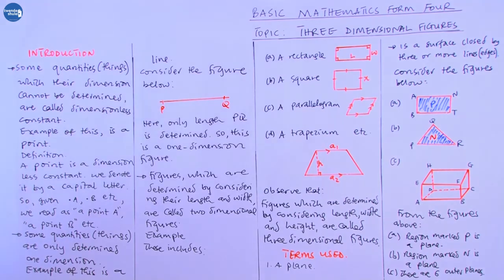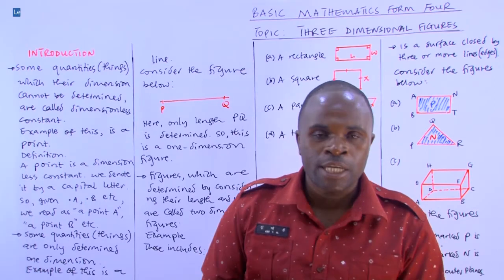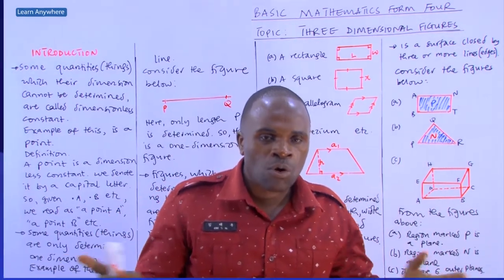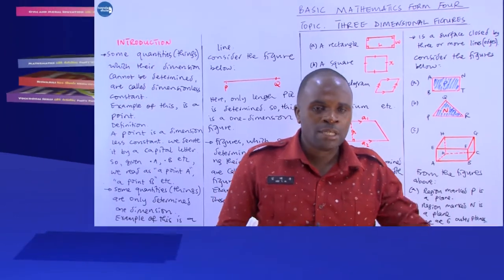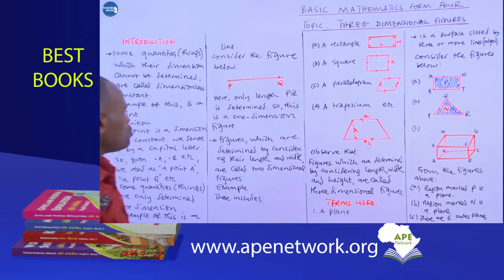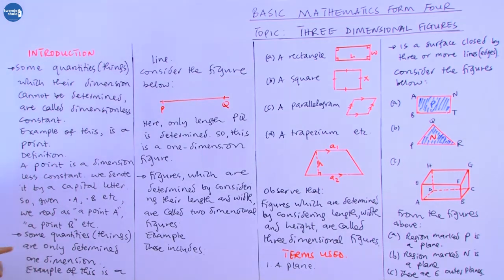There are some figures for which you cannot define their dimensions — you cannot determine whether their dimension is length or width. We consider them as dimensionless constants. A good example is a point. A point is a dimensionless constant, always denoted by a capital letter, but we cannot give it a dimension.